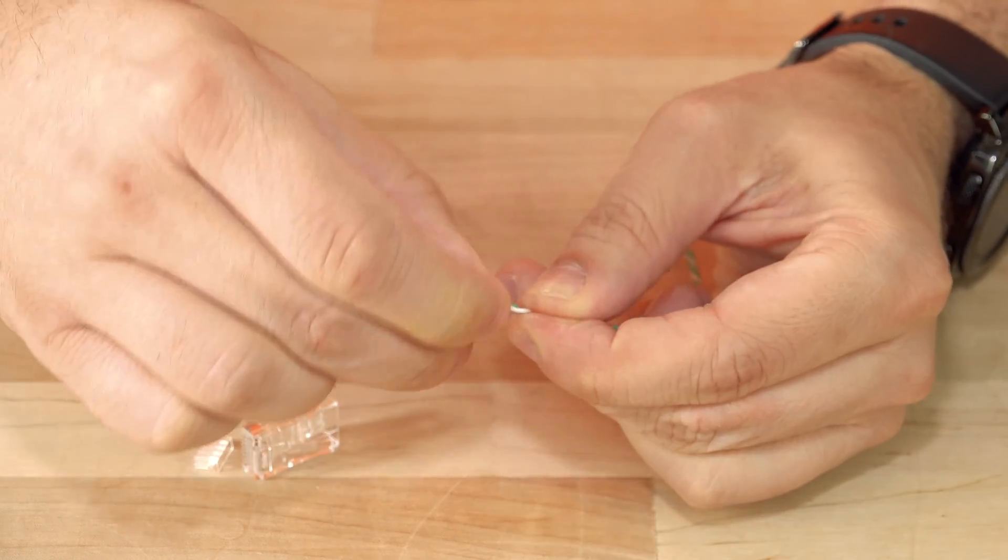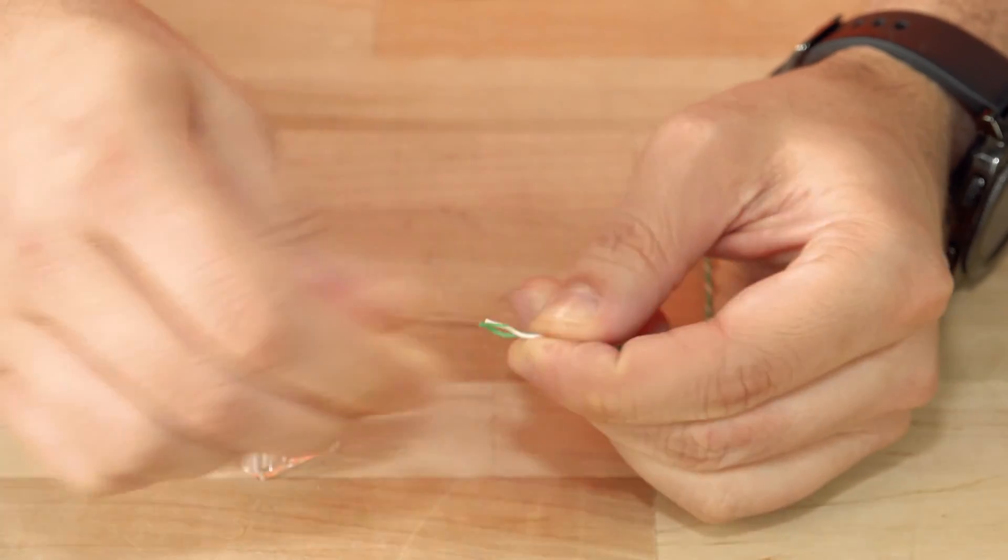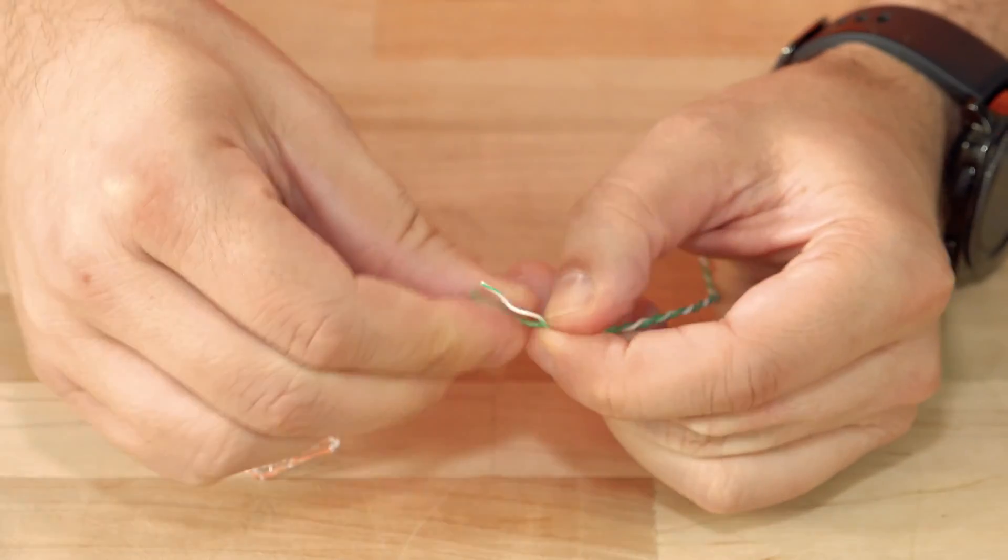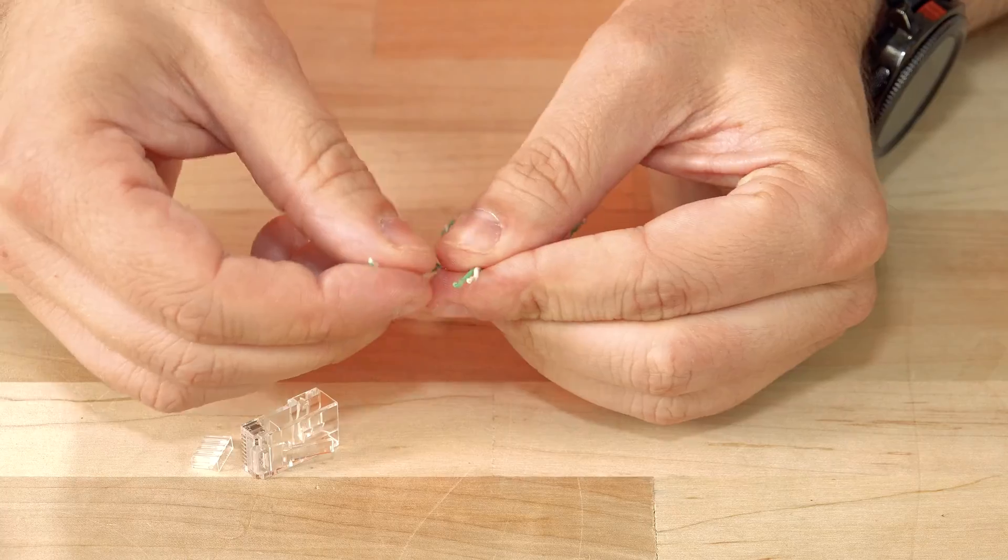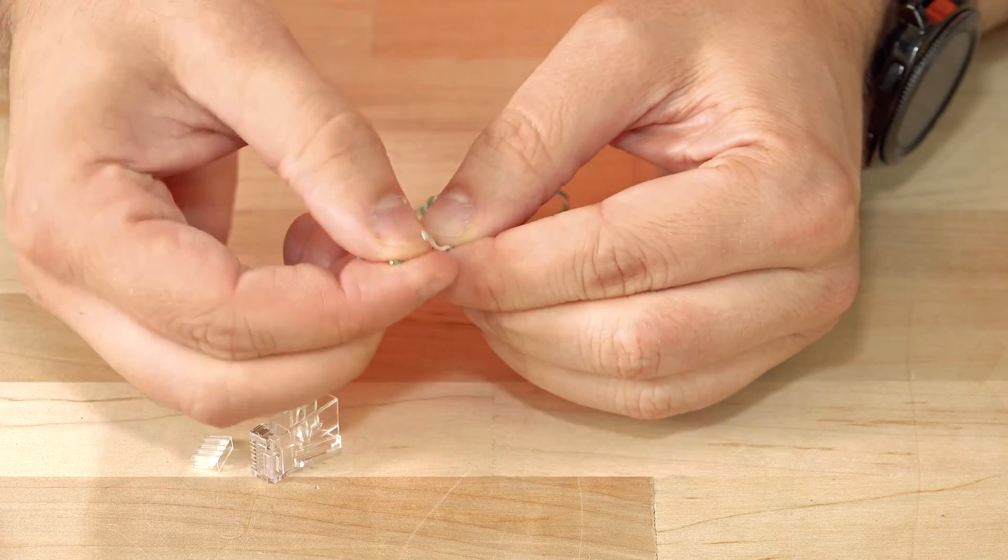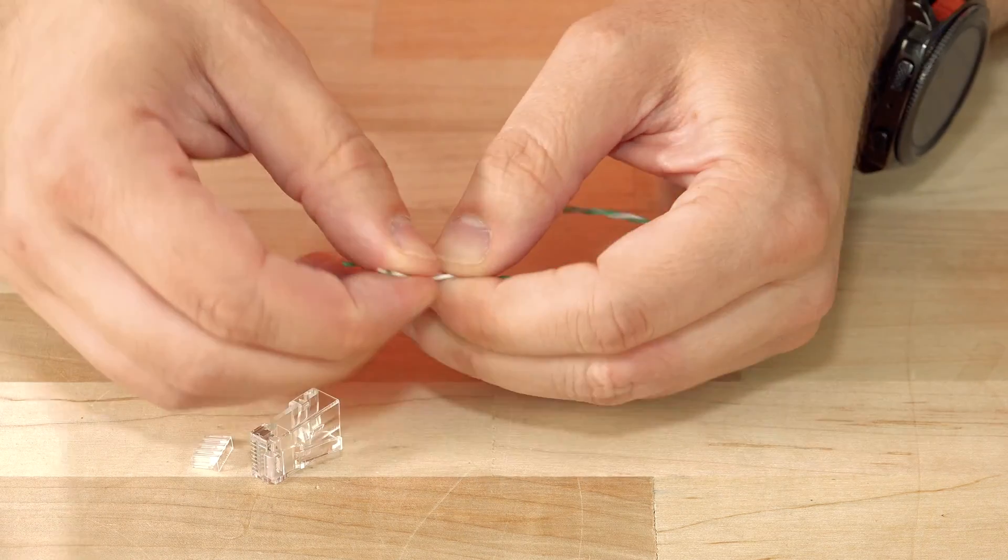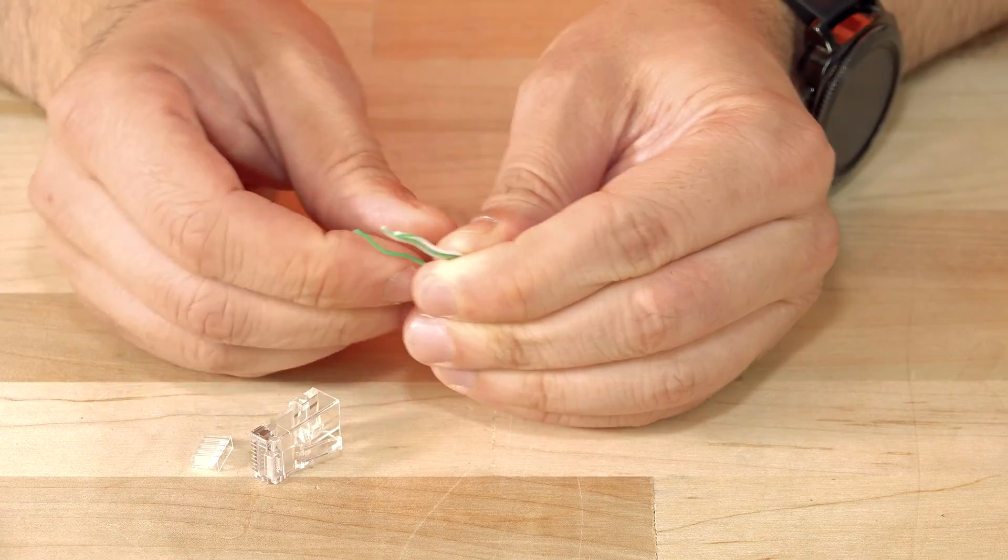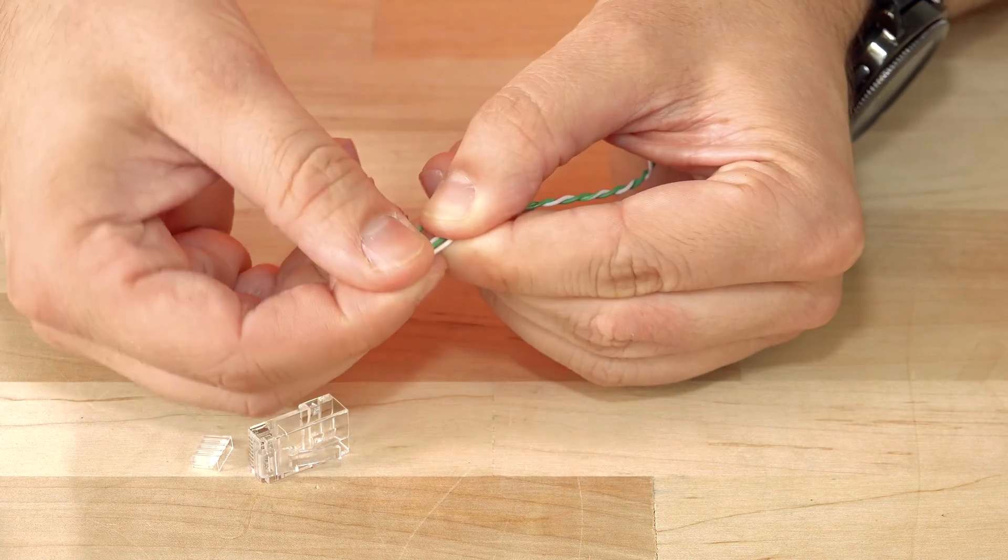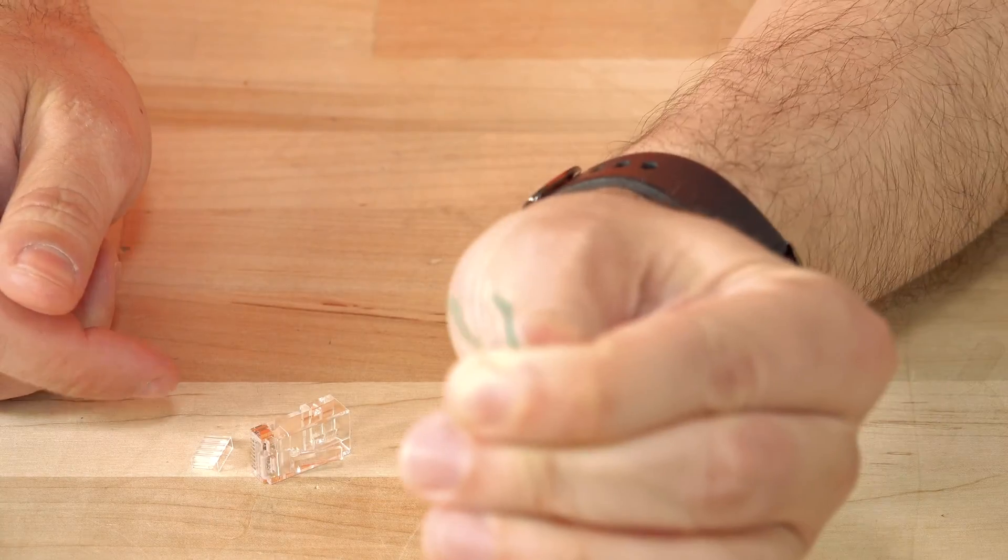So I'm going to start by untwisting one end. So that will be pins 1 and 2 there. And then 1 goes to 3, so we line that up right next to the other two. And then pin 2 is going to go to pin 6. So we want to leave a bit of a gap there.